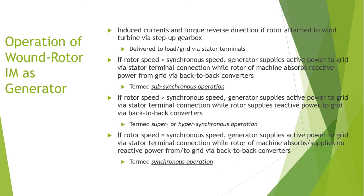If the rotor speed equals the synchronous speed — synchronous operation — the generator supplies active power to the grid via the stator terminal connection while the rotor absorbs or supplies no reactive power. To summarize the three modes: if rotor speed equals synchronous speed, it is synchronous operation; if rotor speed is greater than synchronous speed, it is hyper-synchronous operation; and if rotor speed is less than synchronous speed, it is sub-synchronous operation.